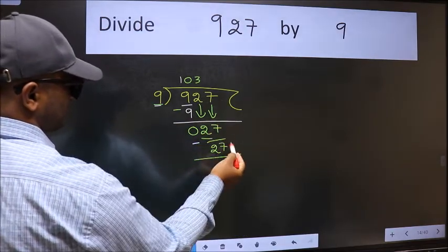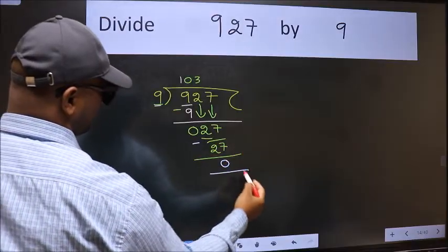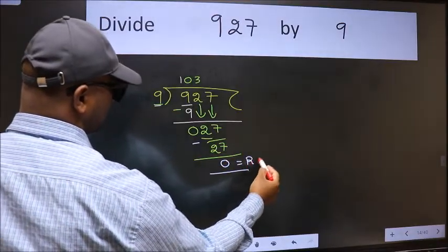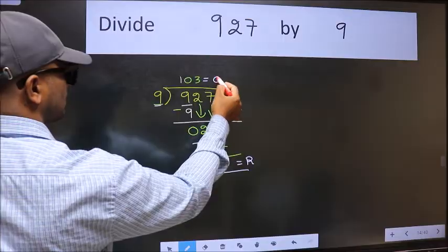No more numbers to bring down. So, we stop here. This is our remainder and this is our quotient.